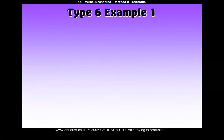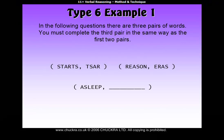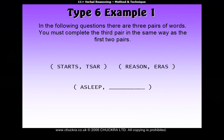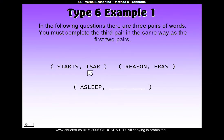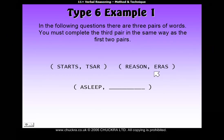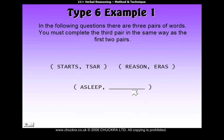Type 6, example 1. In the following questions there are three pairs of words. You must complete the third pair in the same way as the first two pairs. In this pair, 'tsar' is made from some of the letters in 'starts'. In this pair, 'eras' is made from some of the letters in 'reason'. And our answer will be made from some of the letters in 'asleep'.